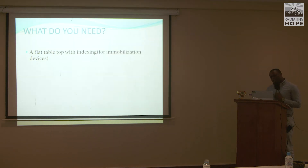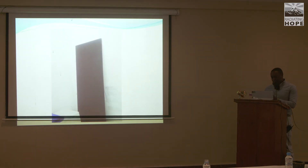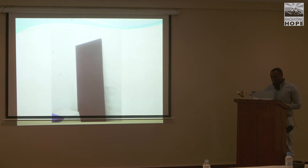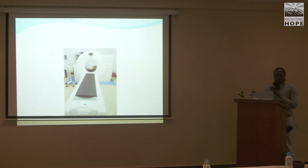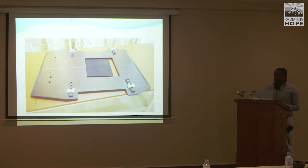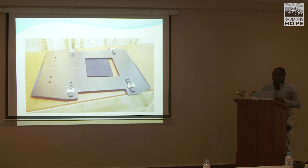What exactly do you need? You just need a flat tabletop with indexing, mostly for immobilisation. As I said, we are using thermoplastic masks. This is the flat table — when we are simulating, we change the couch from curved to flat. It was made by the Shimva company; you just take all the dimensions and you can easily fix it. This is after changing from the curved to flat table. And this is the indexing — you can see a ruler for marking the immobilisation device, and those are the clips for fixing the immobilisation device.